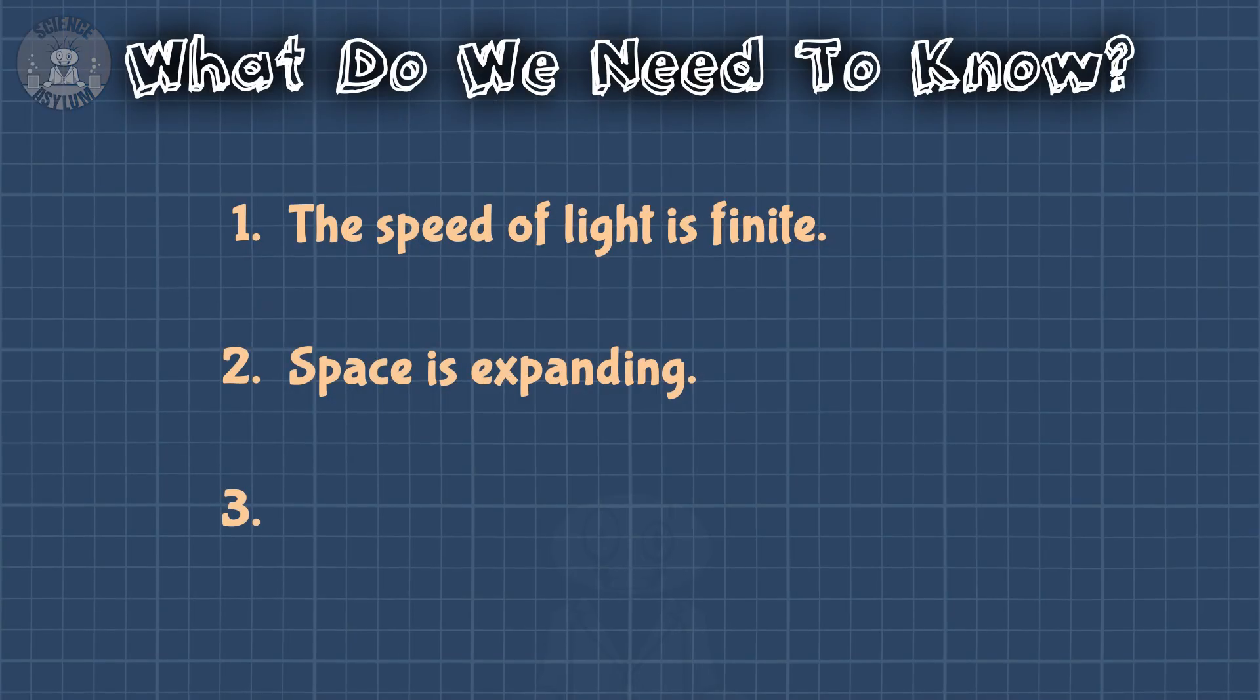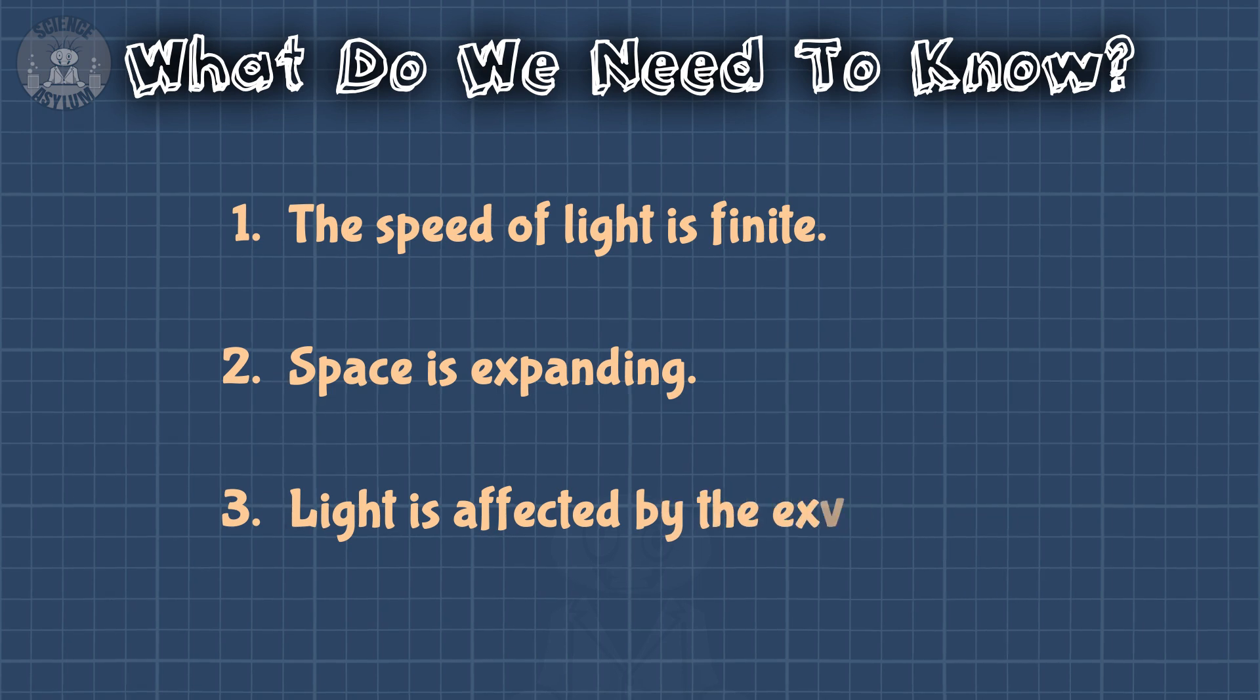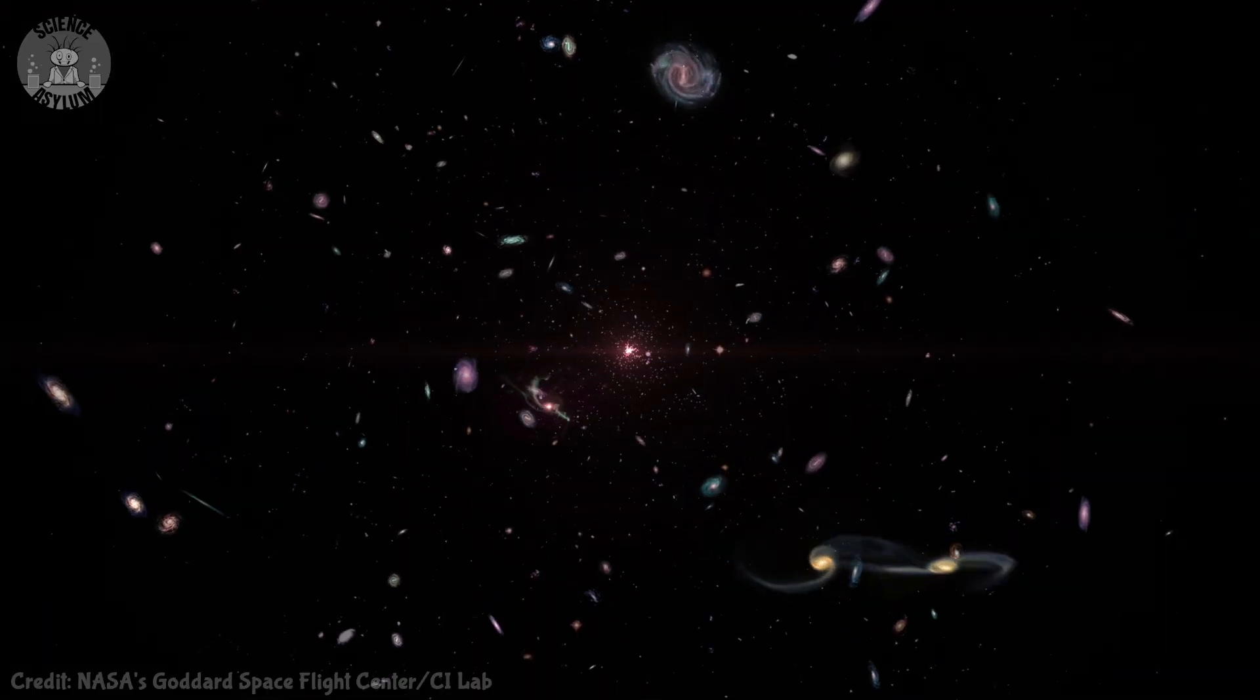Light is also affected by the expansion of space. Yes, really. And I'm not just talking about redshift, though that does happen. Light is dragged along just like the galaxies are. Light just happens to be so fast that it's better at overcoming that expansion than galaxies.